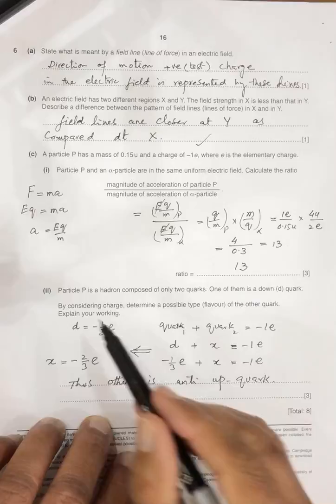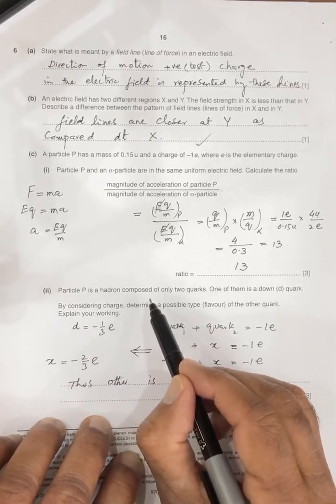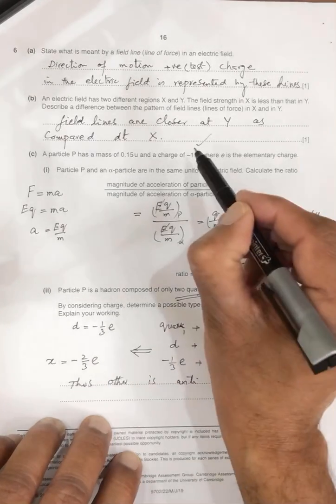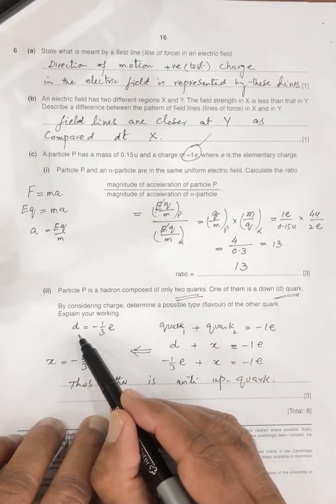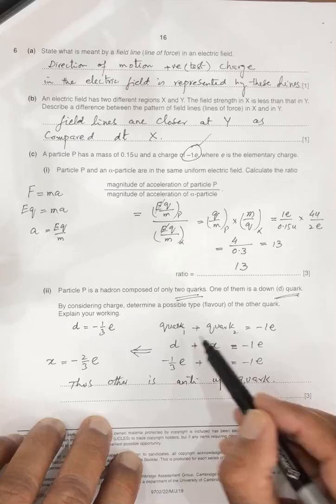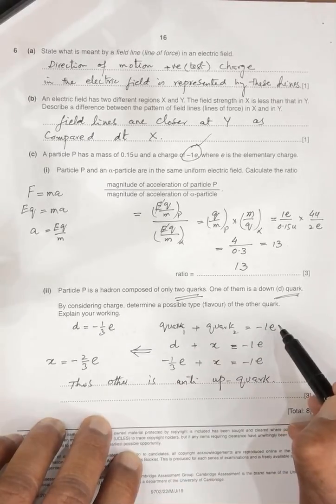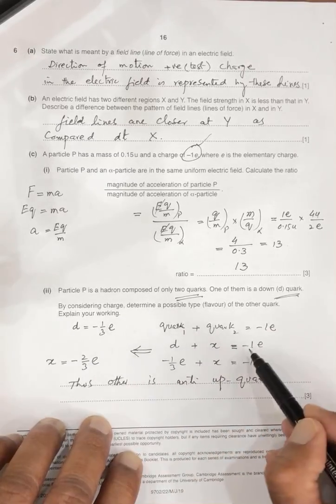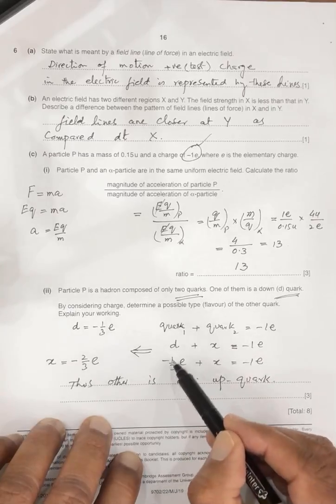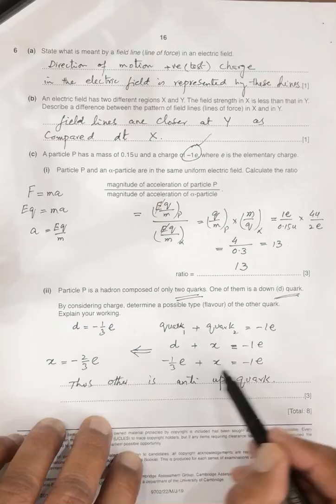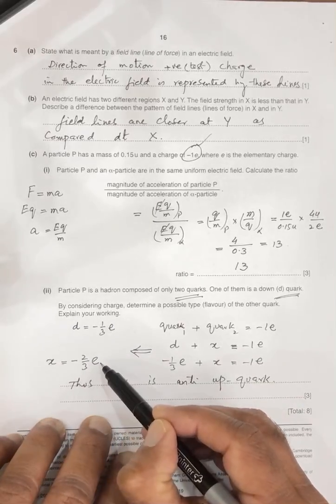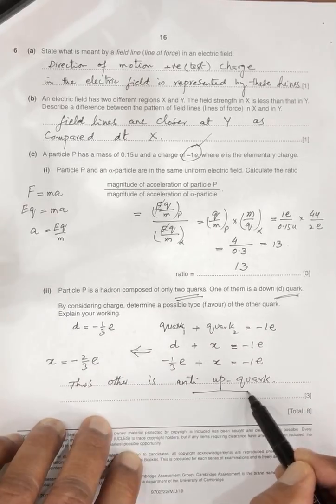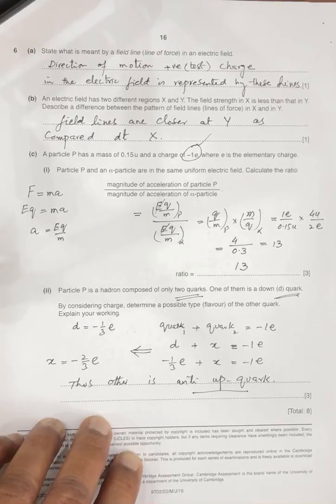Next, last part of this is particle P is a hadron composed of only two quarks. One of the quark is down. Look at the charge, it's minus 1. So from this, down quark has charge minus 1 by 3E. Quark 1 plus quark 2 are combined to make this particle P with charge minus 1E. So one of the quark is down, other unknown X is equal to minus 1E. So down has minus 1 by 3E and quark X unknown. So from this, X is minus 2 by 3E. Plus 2 by 3 is up quark. So minus 2 by 3 will be the anti-up quark. So the second quark is anti-up. So this is the paper.